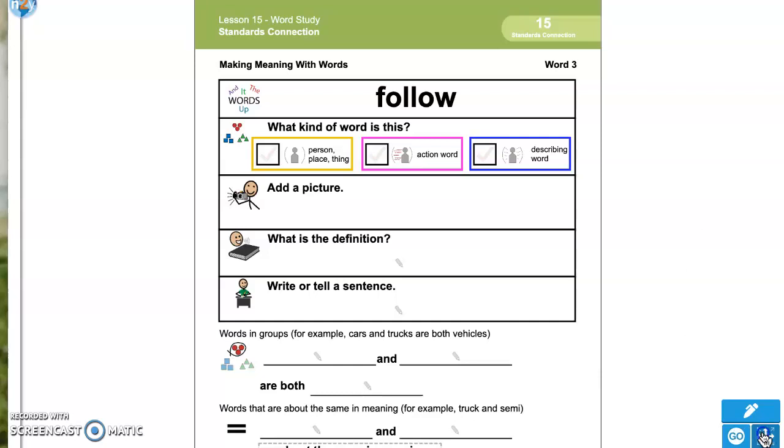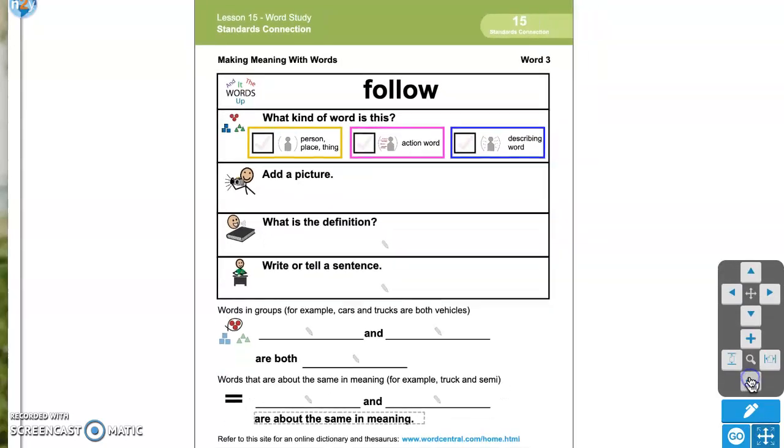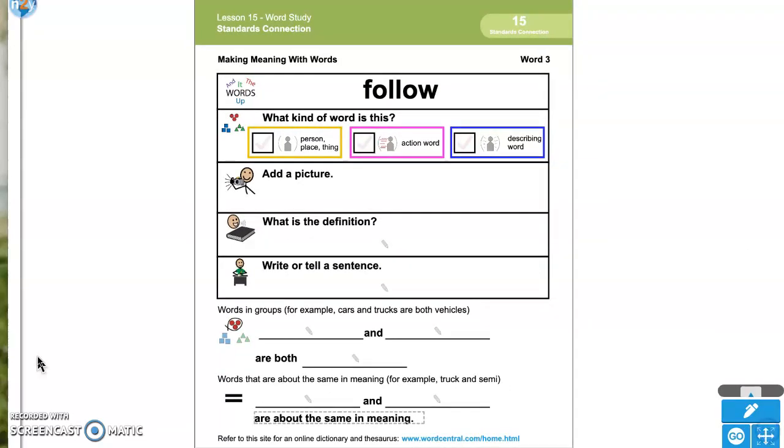First we need to figure out what kind of word is this. Is follow a person, place, or thing? Is it an action word, something we can do? Or is it a describing word? It's an action word because it's something you can do, right? If I asked you to stand up and follow someone, you'd be able to do that.